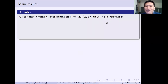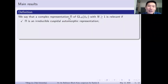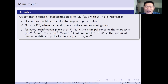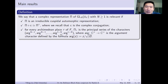First, we require pi to be an irreducible cuspidal automorphic representation. Second, we require pi to be conjugate self-dual: if you compose pi with the conjugation of F, it should be equivalent to the contragredient of pi. Third, pi has a certain homological weight that is minimal. More precisely, for every Archimedean place tau of F, pi_tau is the principal series of n characters, where 'arg' means the argument of a character — the argument of a complex number, given by z over the square root of z·z-bar. This is the generalization of the weight-2 case in the classical modular form setting.